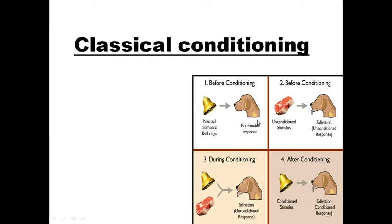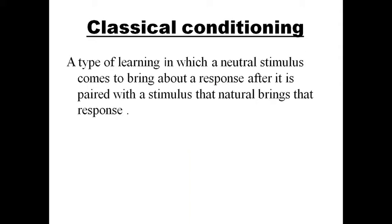Today we are going to discuss the topic of education science and theory of learning. Classical conditioning is a topic of learning. Classical conditioning is a type of learning in which a neutral stimulus comes to bring about a response after it is paired with a stimulus.